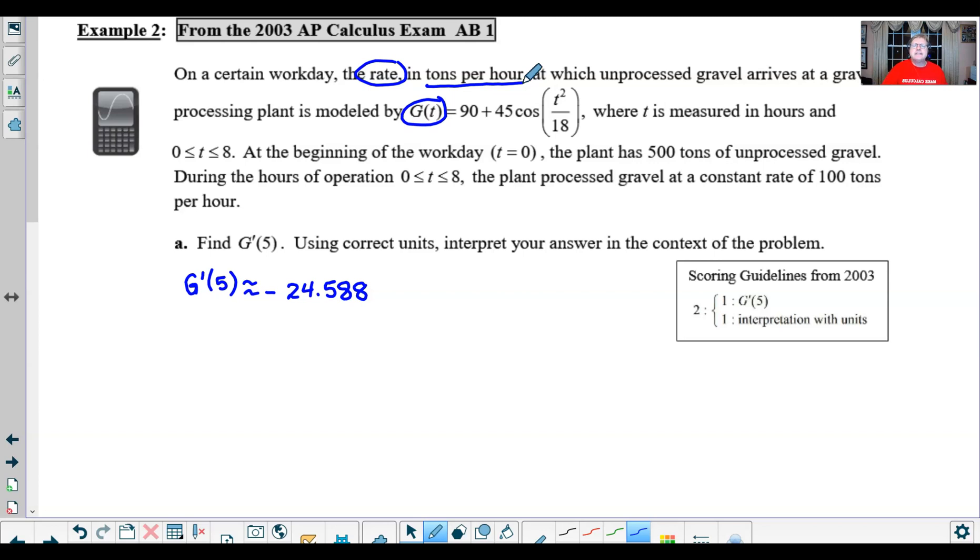So you would use the numerator tons per hour, and then you could divide that by hour, which of course is the same as tons per hour squared. And oftentimes we see it written as such.